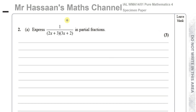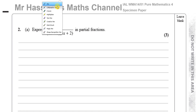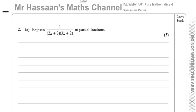Welcome back, this is Mr. Hassan's Maths Channel and I'm now answering question number 2 from the International A-Level Pure Mathematics P4 Specimen Paper. This is part A, which is about partial fractions. We're asked to express 1 over (2x + 3)(3x + 2) in partial fractions.